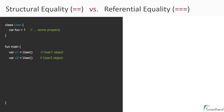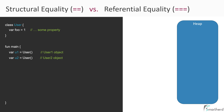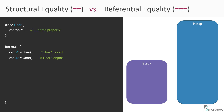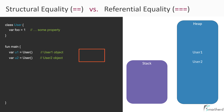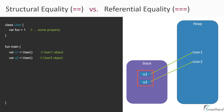We already know that we have heap memory, where objects are actually stored, and stack memory, where we store the reference variables. Suppose we have a user class with some properties and we create two user objects — user1 and user2. These two objects will be created within the heap memory, and their reference variables u1 and u2 will be stored in the stack memory, each pointing to their own objects.